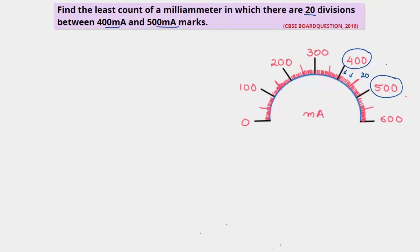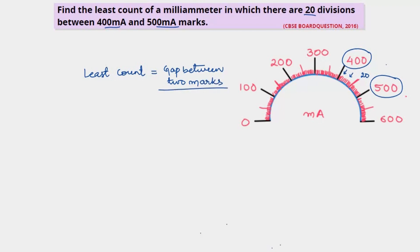Now we'll find out the least count. There is a formula for this: least count is equal to the gap between two marks divided by the total number of divisions.